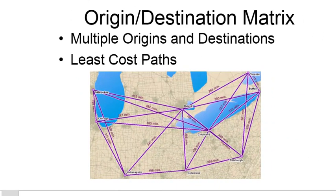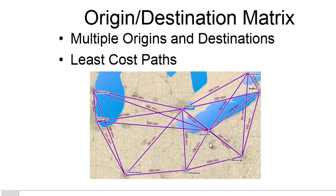Another type of network analysis problem is the origin-destination matrix. Here we have multiple origins and multiple destinations, and for each origin-destination pair, we find the least cost path. For example, here we have Detroit. If we want to drive from Detroit to Milwaukee, it would take 413 minutes taking the shortest route. Driving from Detroit to Indianapolis would take 341 minutes. Driving from Detroit to Pittsburgh, taking the minimum route, would take 332 minutes. So even though these are straight lines on the map, the cost represents the minimum driving time to get from each location.